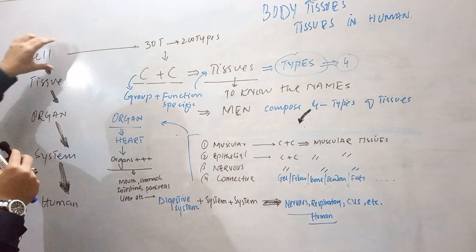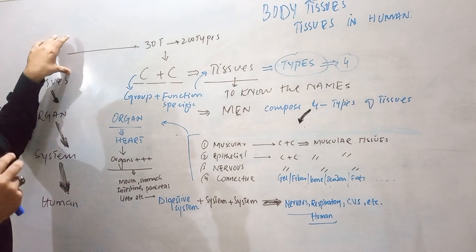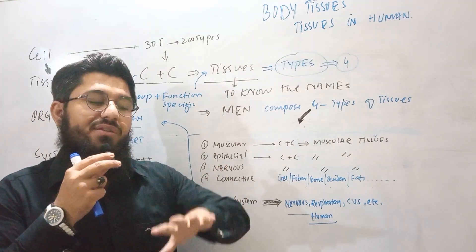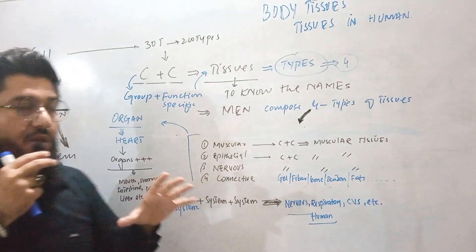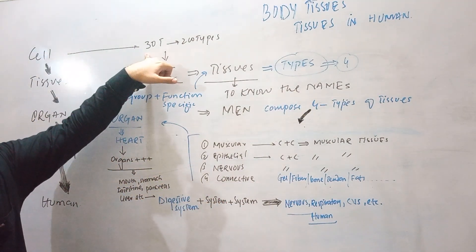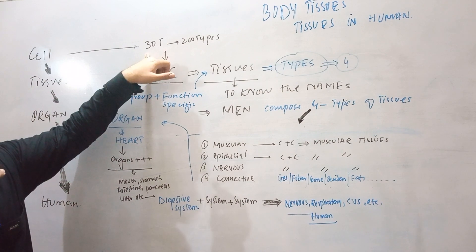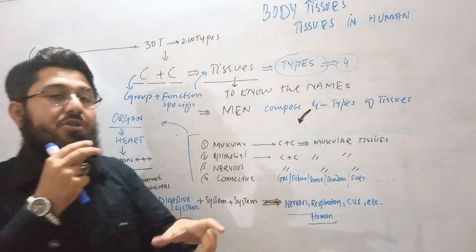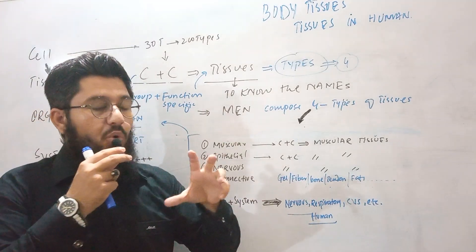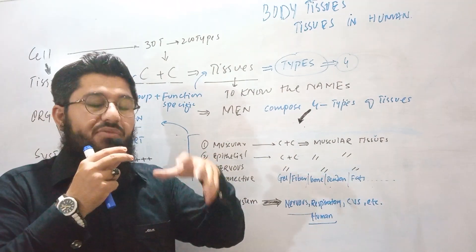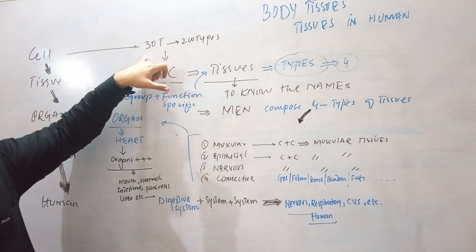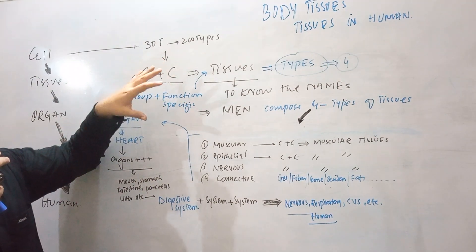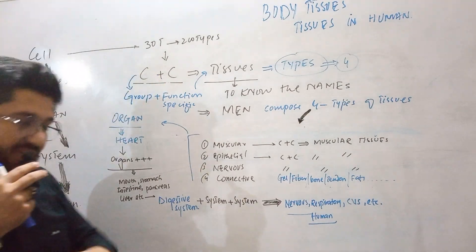Let's start our discussion from the very first point: cell. Cell is actually the unit of life in living organisms. We have 30 trillion cells in our body — 30 trillion cells. All these cells are actually made up of 200 types of cells approximately. So all these 200 types of cells give birth to 30 trillion cells in the body.